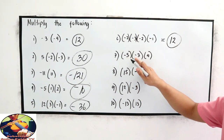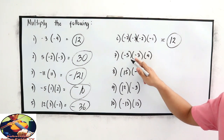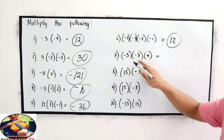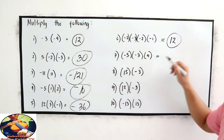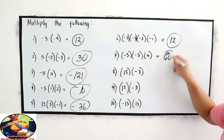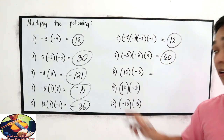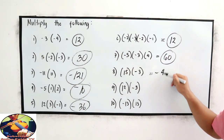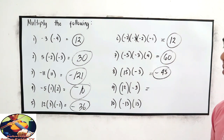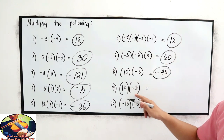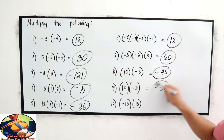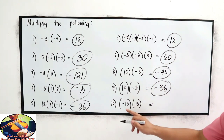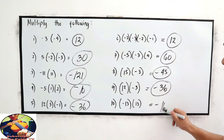Number 7: negative 5 times negative 3 — negative times negative is positive, times positive — the sign is positive. 5 times 3 is 15, times 4 is positive 60. Number 8: 15 times negative 3 — negative 45. Number 9: 12 times negative 3 — unlike signs — negative 36. Number 10: unlike signs again — negative 13 times 13 is negative 169.